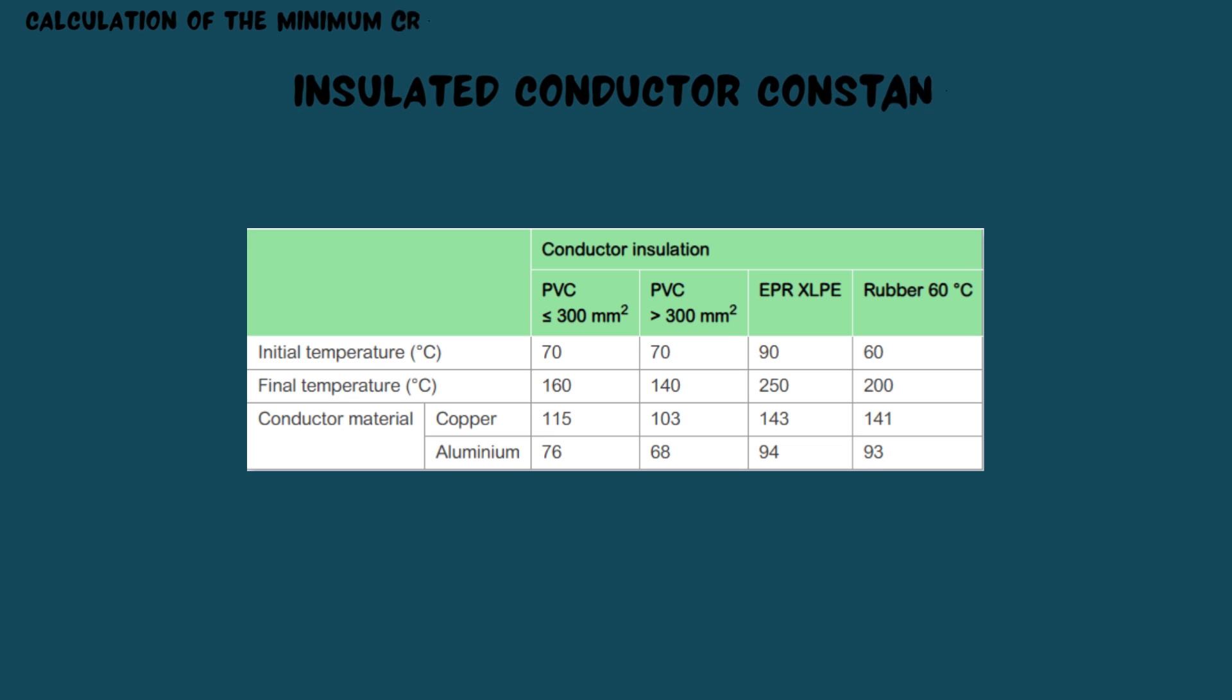The factor K is dependent on the cable insulation, allowable temperature rise under fault conditions, conductor resistivity, and heat capacity. Typical values of K are shown in the table.